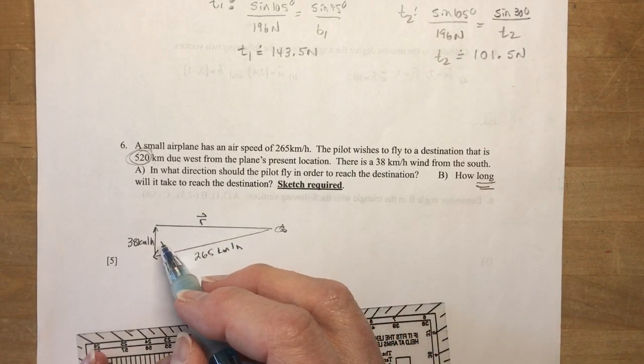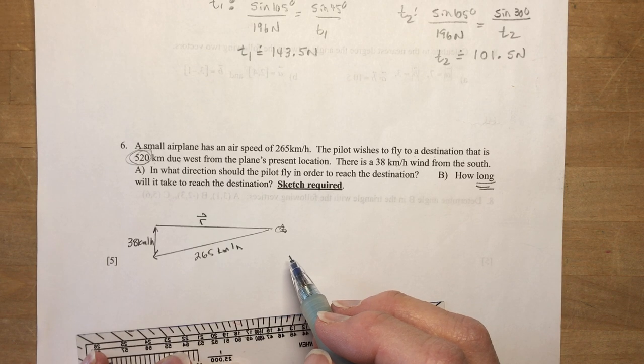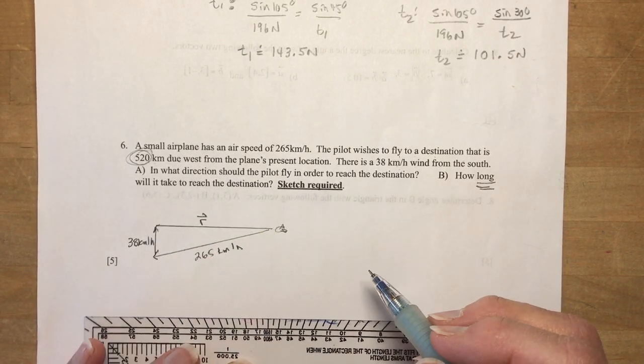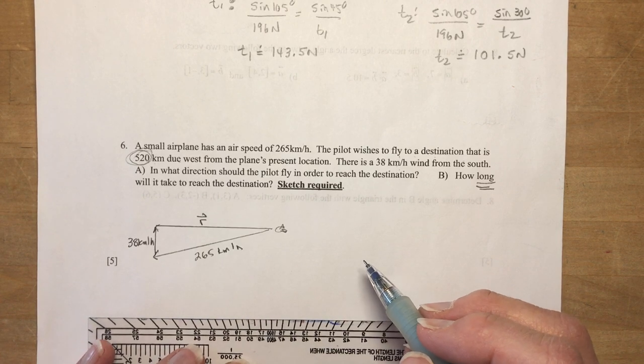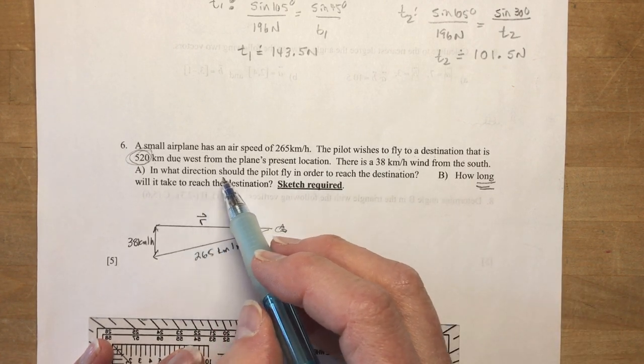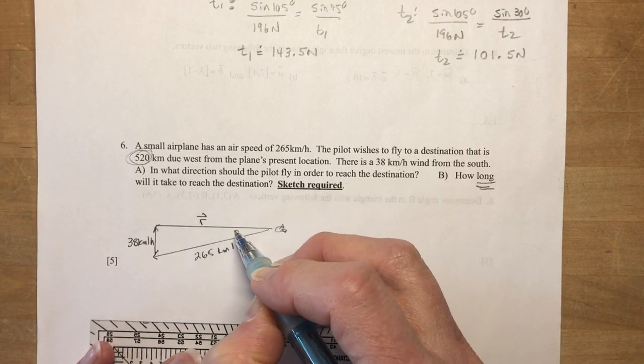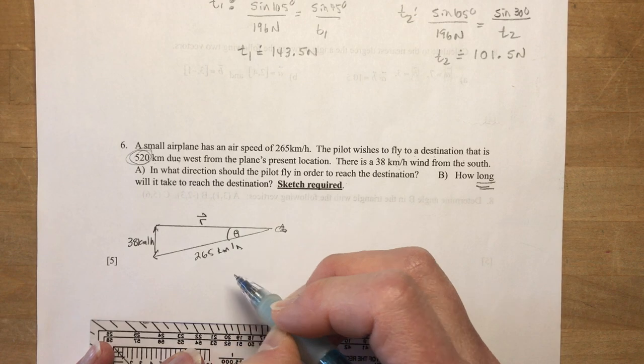And the wind has velocity of 38 kilometers per hour. And this is going to be my resultant. Where you want to go is the resultant, right? So from here to here.